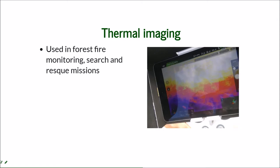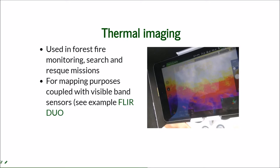Thermal imaging is used mostly for monitoring, search and rescue missions, forest fire monitoring, and some structural inspections. For mapping purposes, it can be coupled with visible band sensors. Because the surface cannot be easily reconstructed from thermal imagery alone, coupling it with visible band sensors allows the thermal information to be draped over the surface, creating a thermal map.